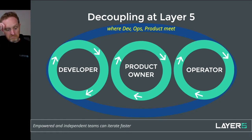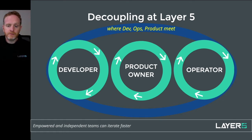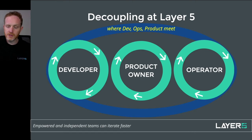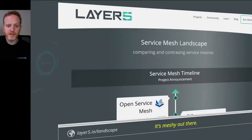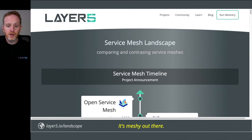It turns out product owners are enabled to manipulate business logic. The mesh can do deep packet inspection — and not just inspection, but packet manipulation. There's a lot that can be done inside of a service mesh. The product owner can, for example, change the pricing structure of a SaaS offering using a service mesh.